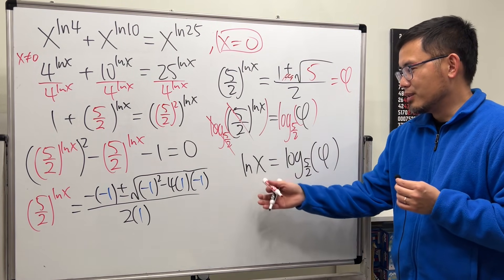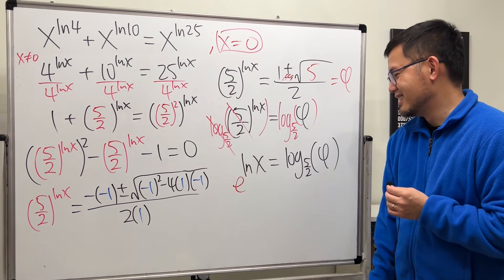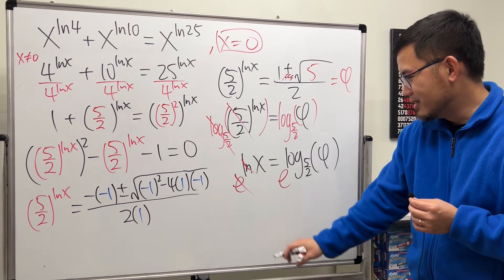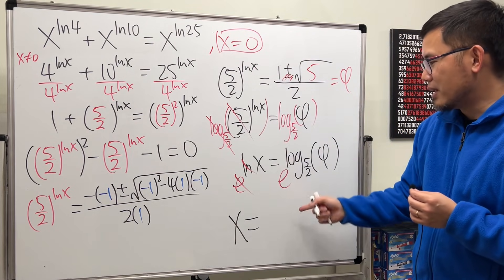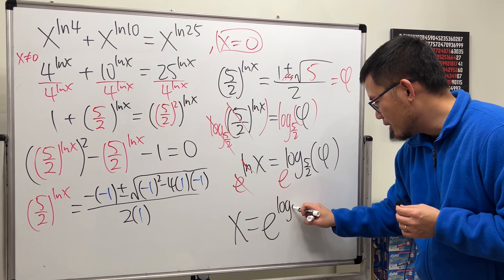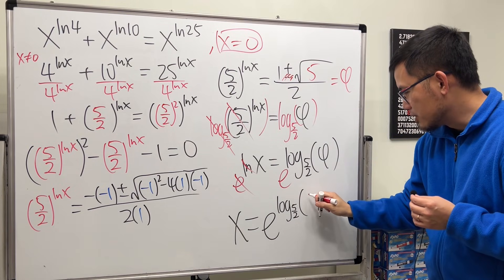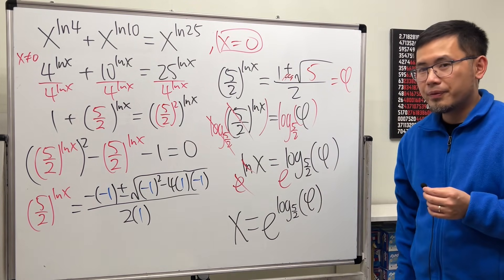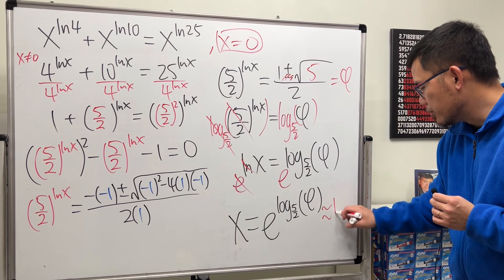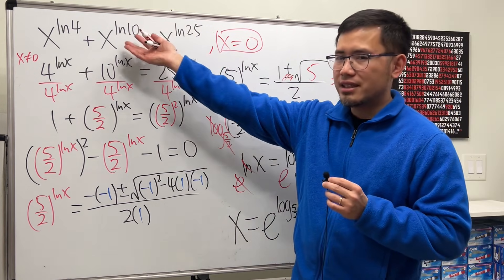Now, finally, to get x by itself, we do e to the power, because this is log base e, and then e to the power. This and that cancel. Ladies and gentlemen, not only x is equal to 0, but x could also be equal to e raised to the log base 5 over 2 of the golden ratio, which is 1 plus square root of 5 over 2. So let's just put that down as phi. And of course, if you use a calculator, then you'll get this right here, being approximately equal to 1.691. And that is another real solution for that equation.